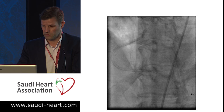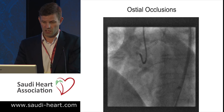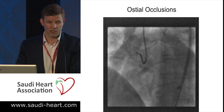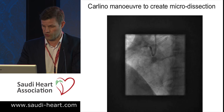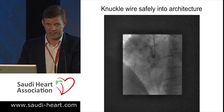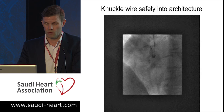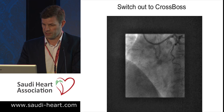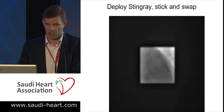Osteolesions tend to be the remit of retrograde only. The problem is retrograde depends on collateral channels, and a good number of cases won't have suitable channels. So we deliver our microcatheter into the proximal vessel using a stiff wire, taking it just a few millimetres, then inject contrast at high pressure with a 2ml luer-lock syringe. We then introduce a knuckle wire into the sub-intimal space, which allows us to define our anatomy and confirm we're within the architecture of the vessel. We take that quite far to support delivery of the CrossBoss, which we then advance to a position where we can re-enter. We stick, swap, and complete the case.